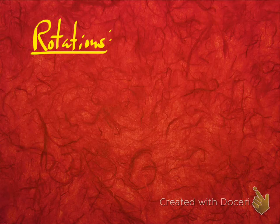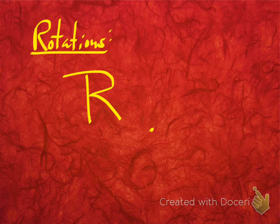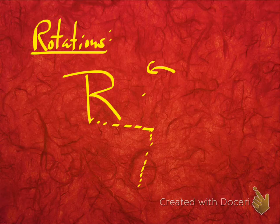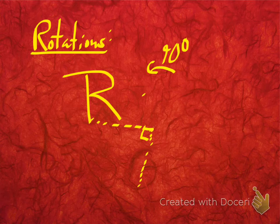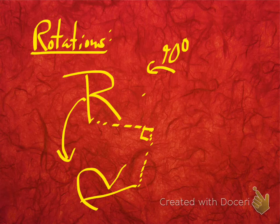Now let's try it with a rotation. If I take a rotation, I need a center point, and what I do is essentially take each point and measure from the center point. Let's say I'm rotating 90 degrees counterclockwise — every point is going to basically rotate about 90 degrees. You should get something that looks about like this; it's not perfect, but that's the idea. This is going to rotate around to here.